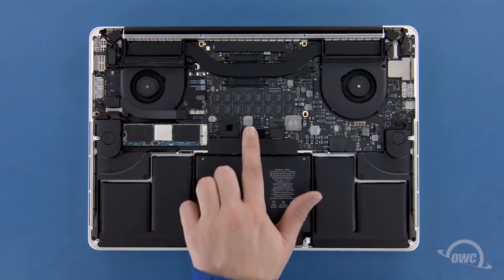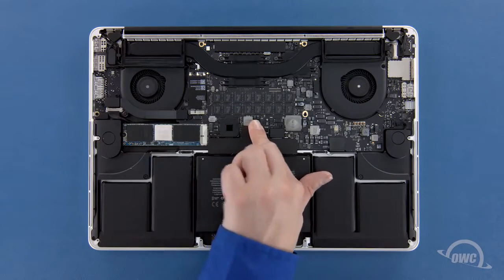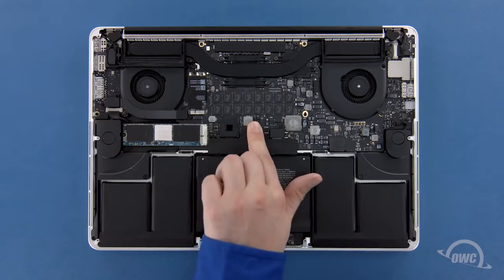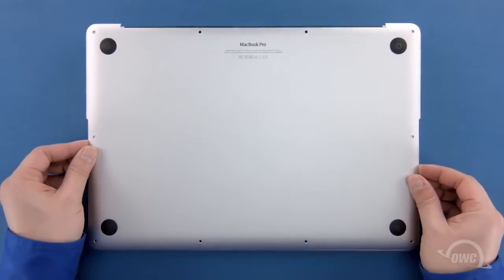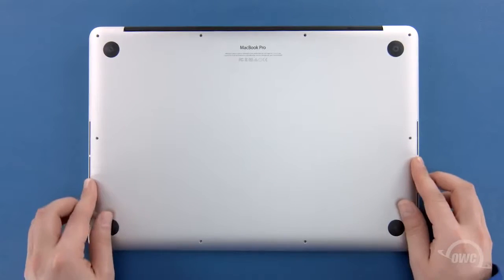Finally, reconnect the battery by lining up the connector and simply pushing it back into its socket. You can now set the bottom cover back into place and push on it to re-engage the clip.